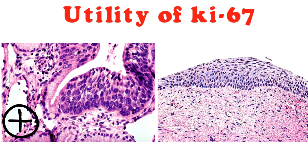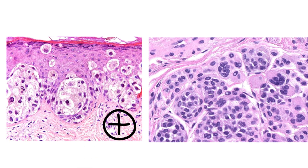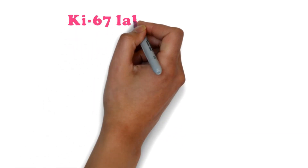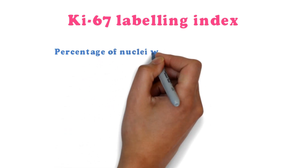Regarding the utility of ki-67, it helps to differentiate between benign and malignant lesions. For example, HSIL cells are ki-67 positive but atrophy or normal cervical tissue is ki-67 negative. Colonic adenomas are ki-67 positive but non-adenomatous polyps are ki-67 negative. It also differentiates melanoma, which is ki-67 positive, from nevus cells, which are ki-67 negative. In cases of adnexal tumors, it can distinguish benign, borderline, and malignant lesions.